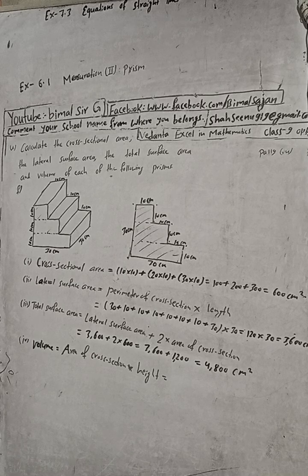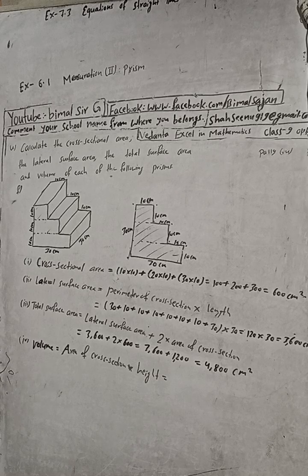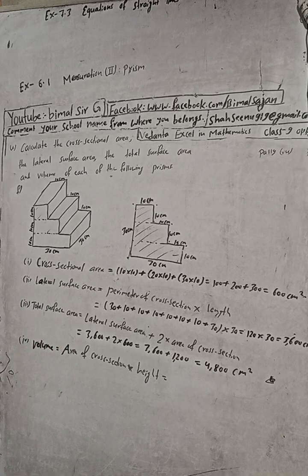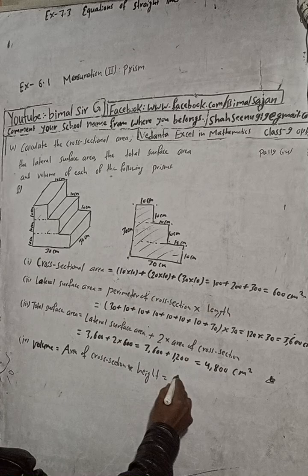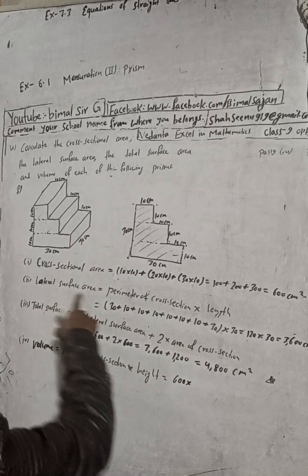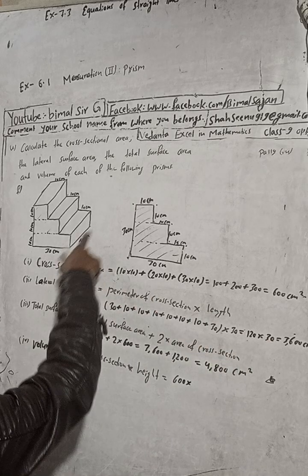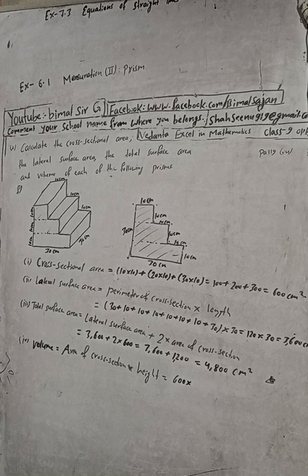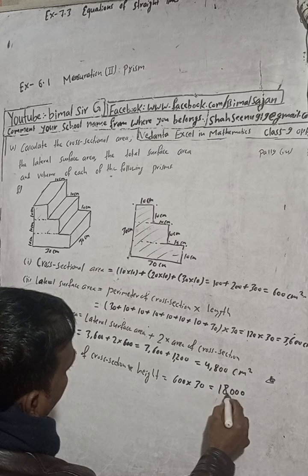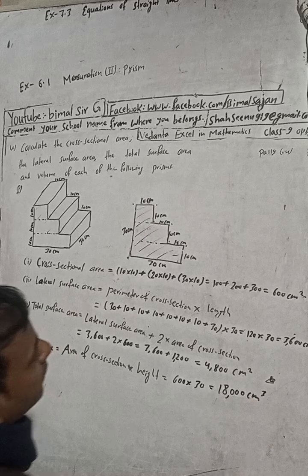The book gives 4200 — there is a print mistake in the book, okay, this is a print mistake. Now volume: area of cross-section into height. Area of cross-section is 600, and height (length) is 30. So 600 × 30 = 18,000 cm³. In the book it is correct.